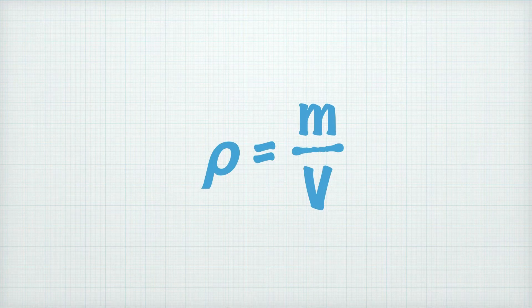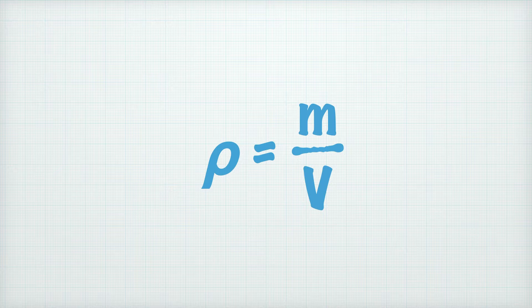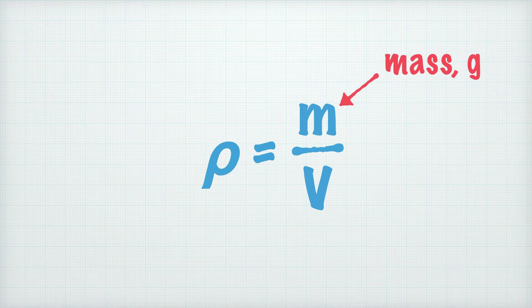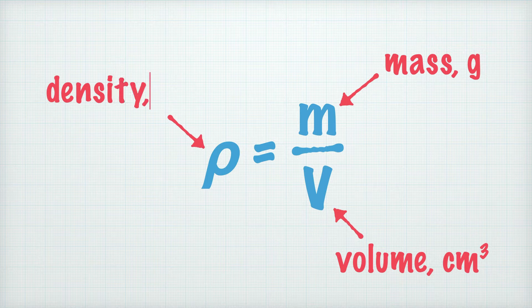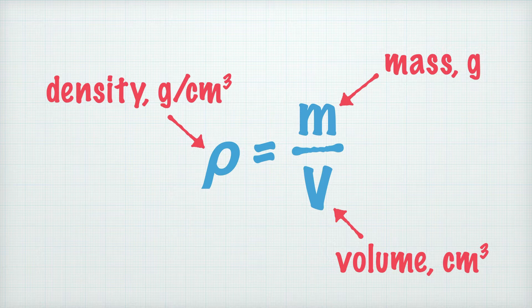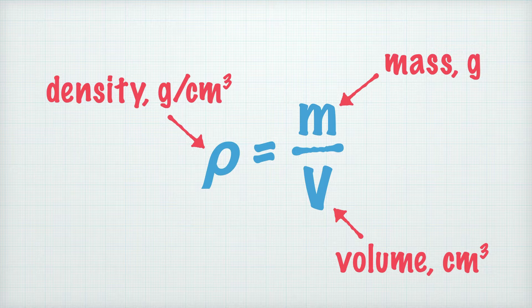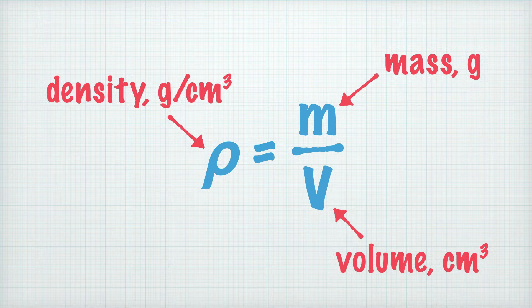Here's an equation we can use to work out density. We just divide the mass of an object in grams by its volume in cubic centimeters. That gives us the density of the object in grams per cubic centimeter. The symbol that's used for density here is the Greek letter called rho, which looks a little bit like a letter P.